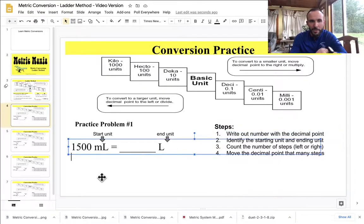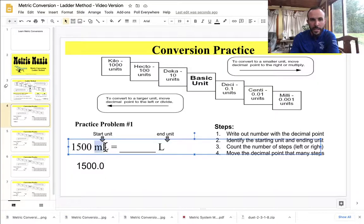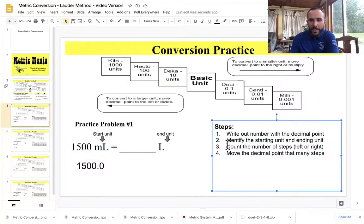So you first write it out with the decimal point. So I'm going to write out, in this case, 1500.0. And I've got my decimal point in there. We have to identify the starting unit and the ending unit. And I'm converting from milliliters to regular liters. So milli to the base. So I've identified the units. And now I need to count the number of steps that I'm going to move left or right.